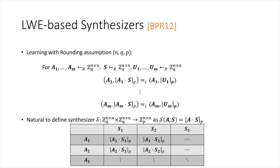Using the LWR assumption, it is straightforward to construct a natural synthesizer that takes in two matrices A and S, multiplies them, and then rounds the result. The security follows directly from LWR, and since the synthesizer consists only of matrix multiplication and rounding, it can be computed by a low-depth circuit.